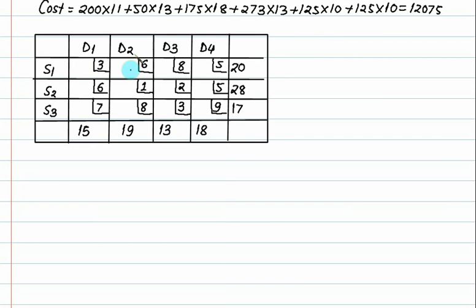First, we will prepare the basic solution by VAM method, that is the penalty method. But before this, is it a balanced transportation problem? What is total quantity? 65 — this also 65. This one is supply, this one is demand.